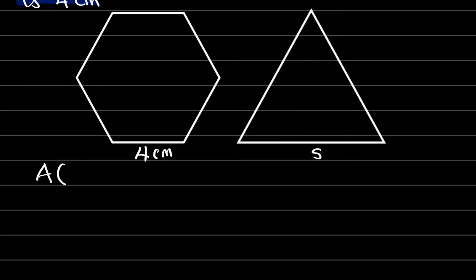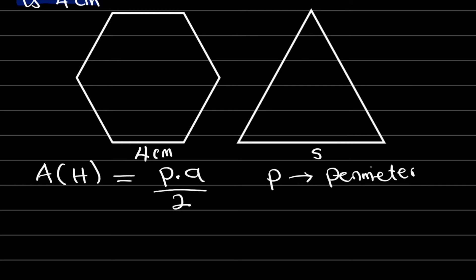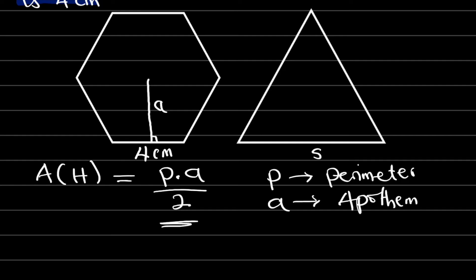The area of the hexagon can be obtained by multiplying its perimeter by its apothem, divided by 2. The apothem is the perpendicular distance from the center of the hexagon to any of its sides — let me call it A. So now let us go ahead and find the perimeter, find the apothem, substitute into this formula, and obtain our area.